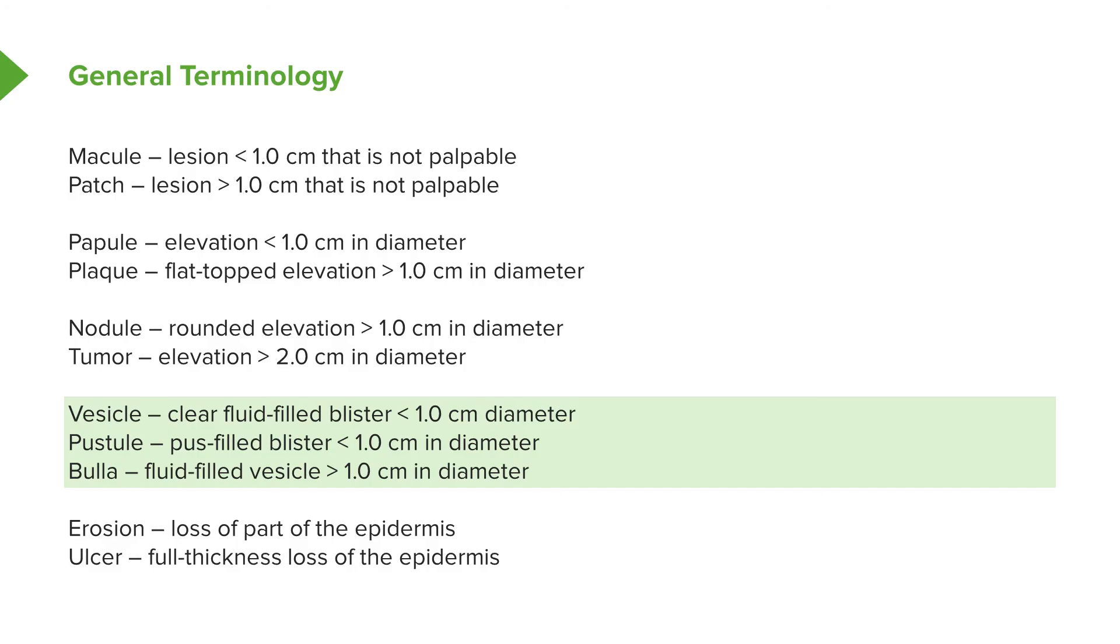Bullae. When we get into what's known as your vesiculobullous, or in other words, your bullous type of conditions, pemphigus vulgaris or bullous pemphigoid. A bulla is going to be fluid-filled as well, but a little bit larger, greater than one centimeter in diameter.